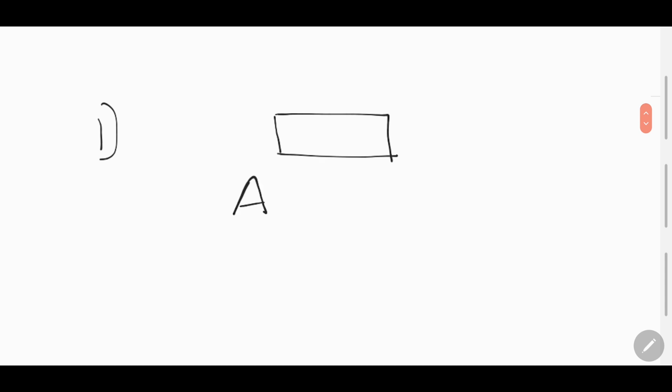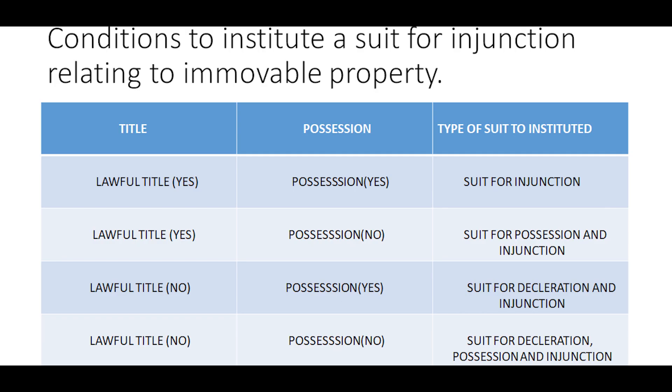Let's look at the first condition with the help of an example. Mr. A is the lawful owner of the site and is in peaceful possession and enjoyment of the property. But Mr. B comes and tries to dispossess Mr. A from his site and tries to interfere with his peaceful possession. Then Mr. A can institute a suit for injunction against B at the court. In other words, any person who has a lawful title and is in possession of the property can institute a suit for injunction if someone comes and tries to interfere with their peaceful possession.